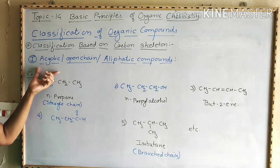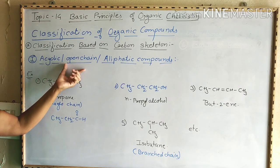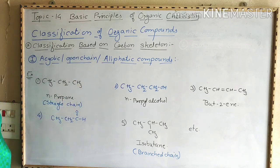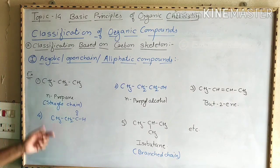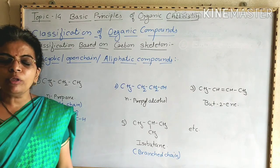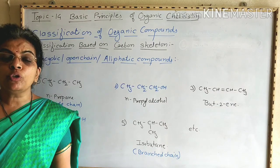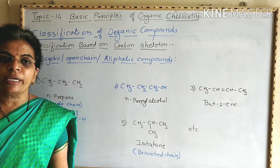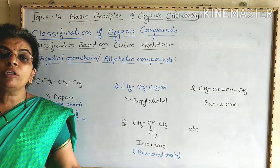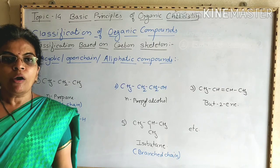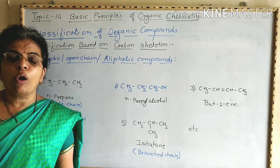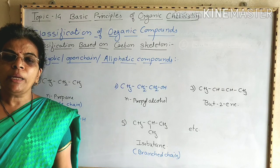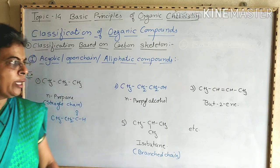Acyclic compounds, or open chain compounds, are also named as aliphatic compounds. These are compounds in which there is an open chain of carbon atoms. We know that carbon atoms show the catenation property in organic compounds — that is, they can form a long chain of carbon atoms. On the basis of this carbon skeleton, in case of acyclic or open chain compounds, they may be straight chain or branched chain.